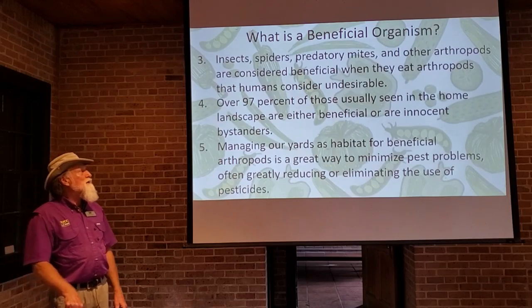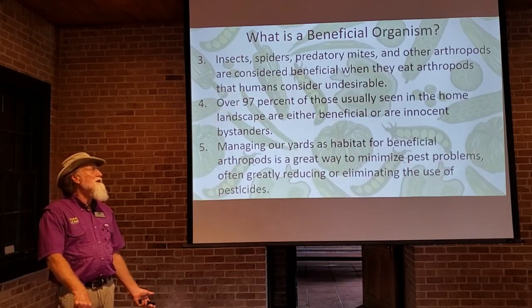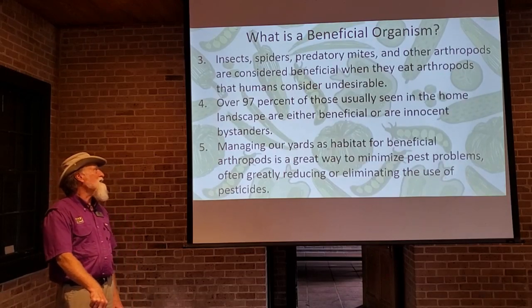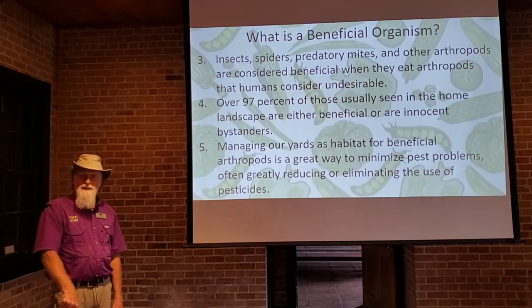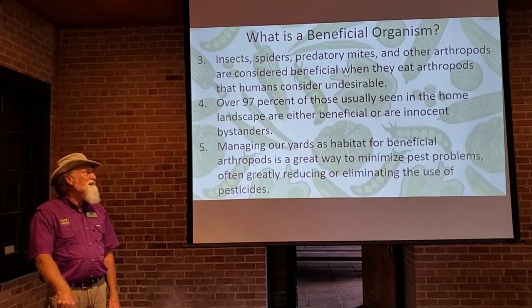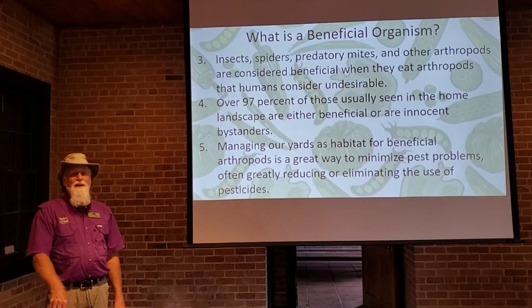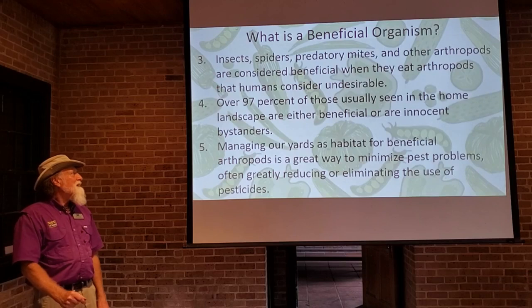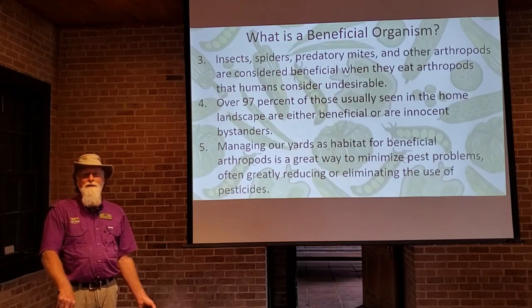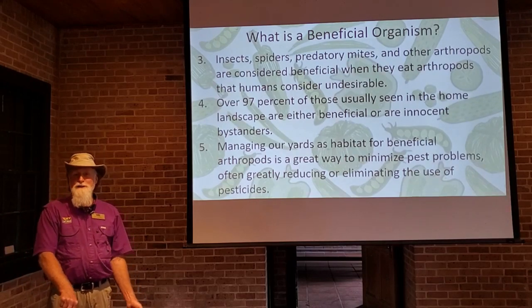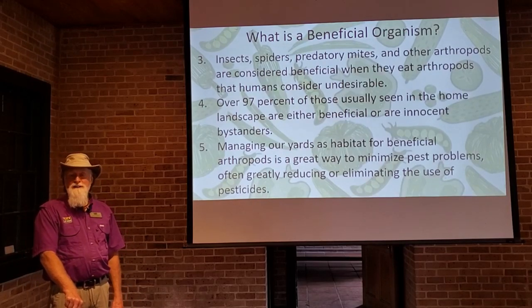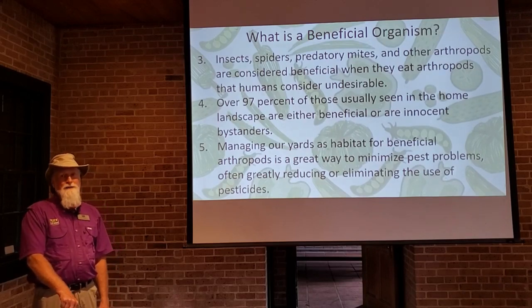Insects, spiders, predatory mites, and other arthropods are considered beneficial when they eat arthropods that we humans consider undesirable in the garden. Over 97% of the arthropods, insects, and other things we see in our garden are either beneficial or are just innocent bystanders who happen to be in the garden. The majority of insects we see aren't there to harm the garden or harm us.